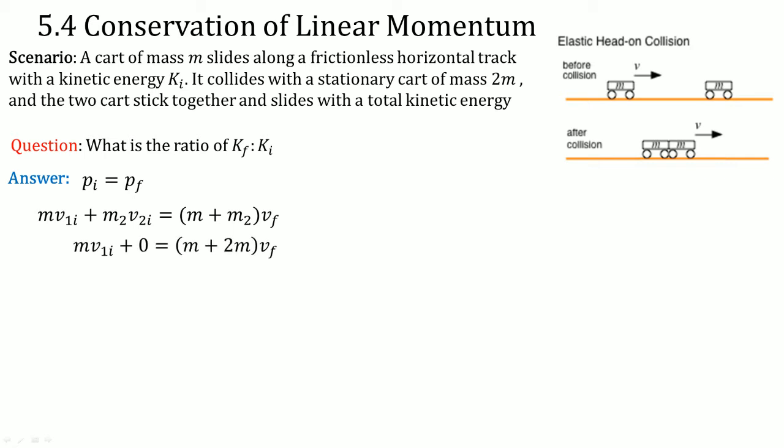Notice m₂v₂i is equal to zero because the object was stationary. Now we can add things together so the mass becomes 3m. Now we can divide mass on both sides, leaving you with v1i equals 3vf.